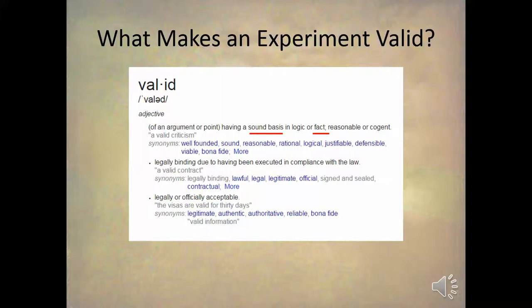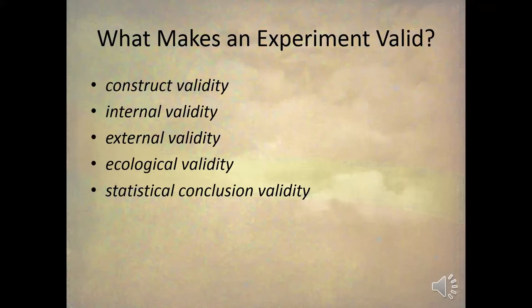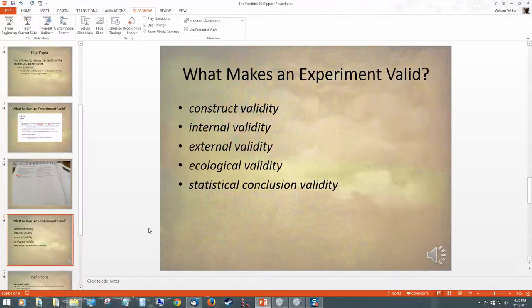What makes an experiment valid? What is valid? Valid means a sound basis in logic or fact — it's well-founded and sound. That is, the methodology is sound, it's logical, it's justifiable, or if you want, legal — meaning you did everything correctly. As you can see in our index and our textbook, there are many pages devoted to different types of validity.